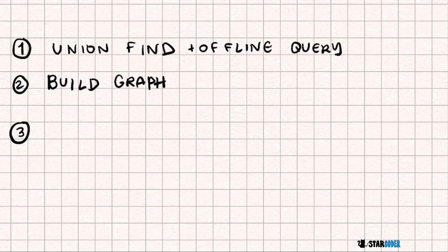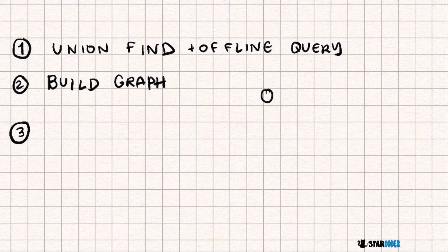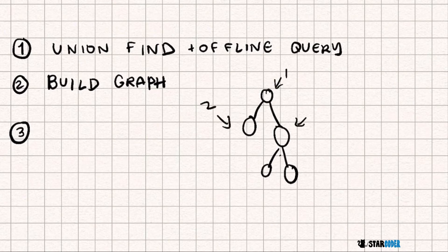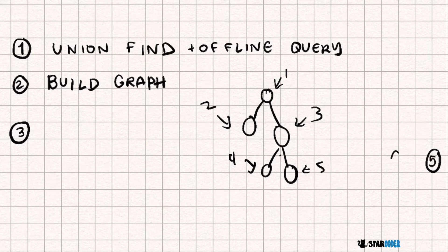We're going to use offline queries. Even though the question asks us to build a graph and then remove nodes one by one, what we're going to do instead is actually build the graph up. We take the order of the nodes being removed and go backwards. So if they're removed in order 1, 2, 3, 4, 5, we build starting from 5, then add 4, then 3, then 2, then 1.